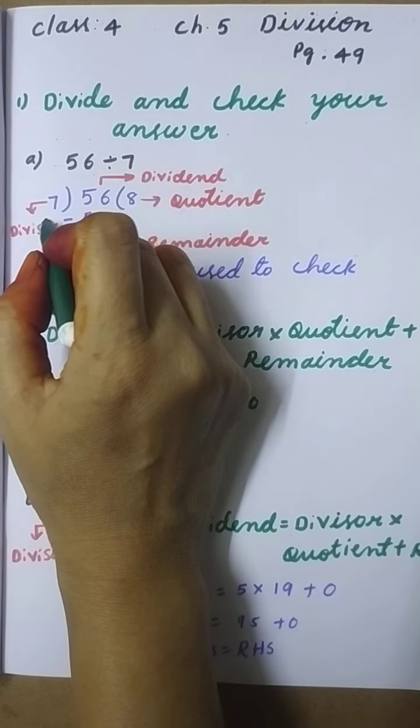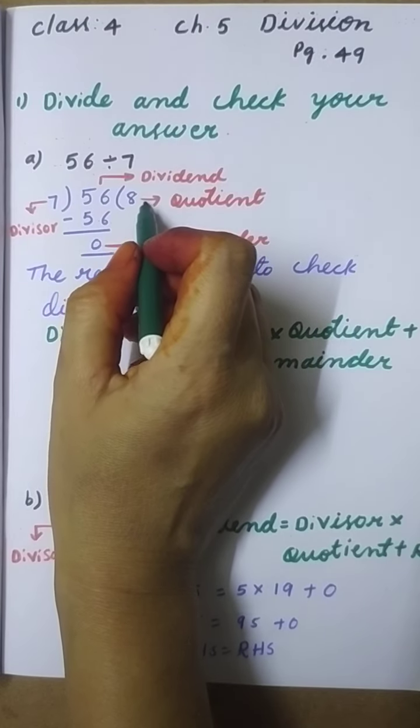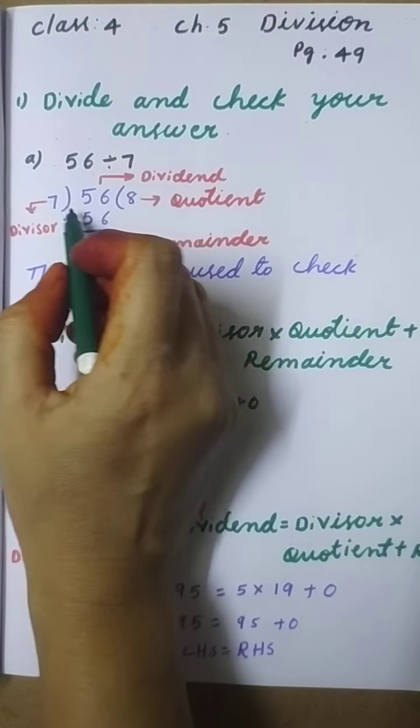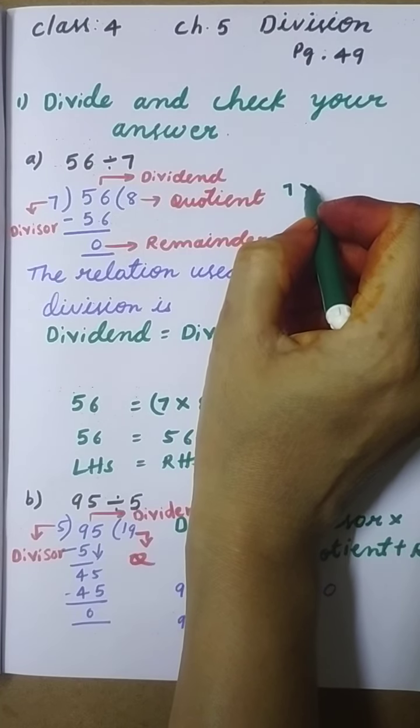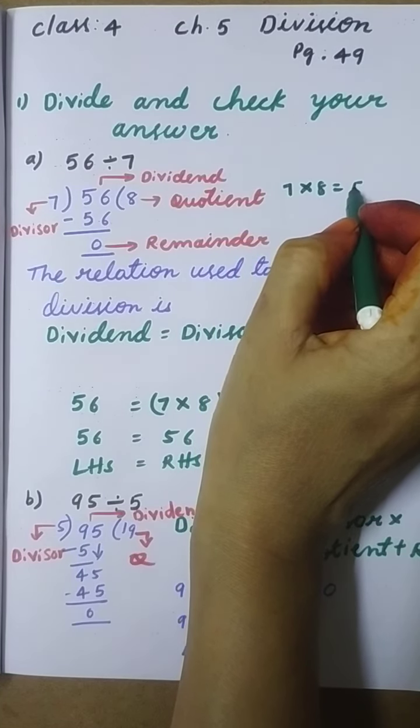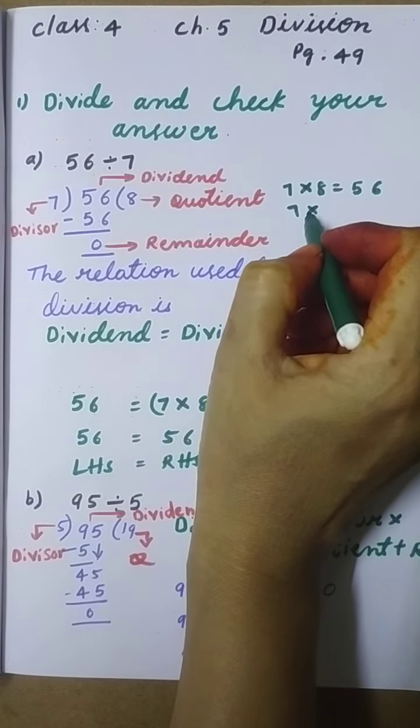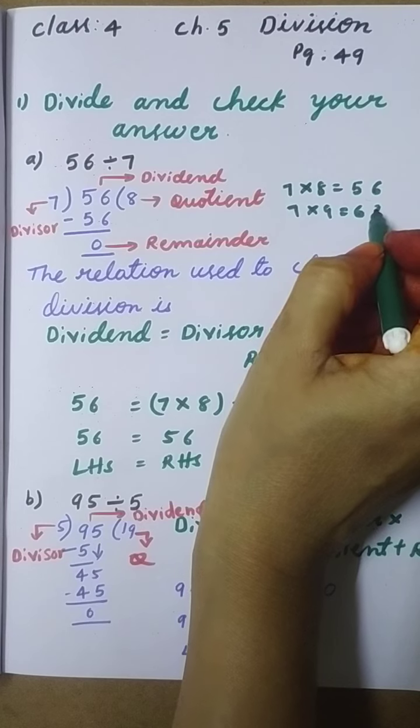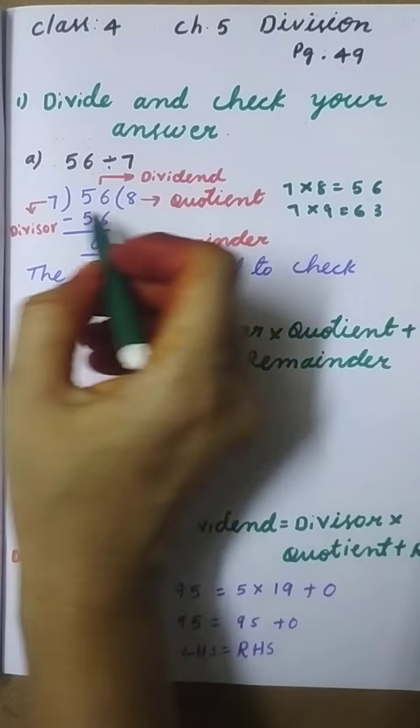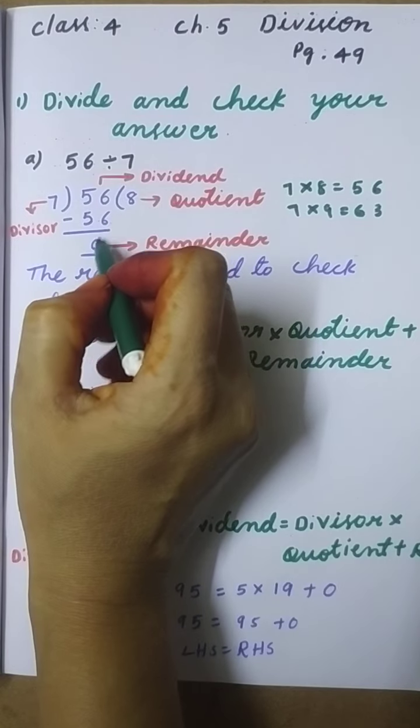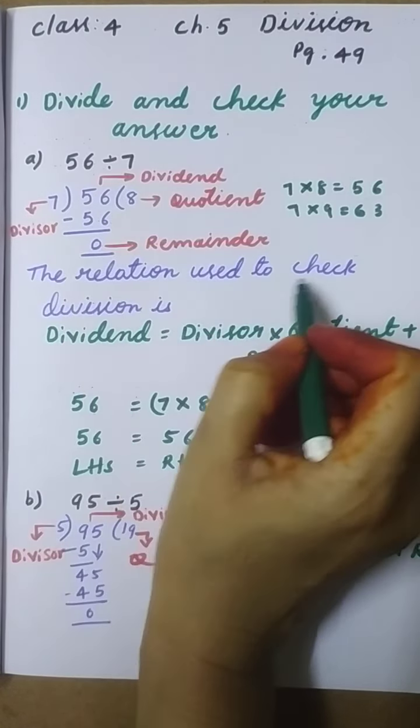Whatever we get as the answer is the quotient. 7 times 8 is 56. We should not take a bigger number like 7 times 9 equals 63. That's why we are taking 7 times 8 equals 56, and we get 0 as the remainder.